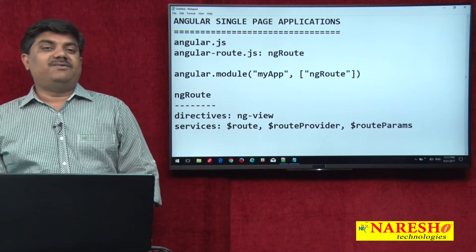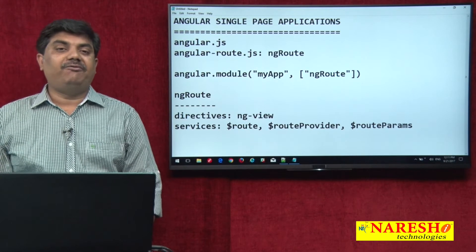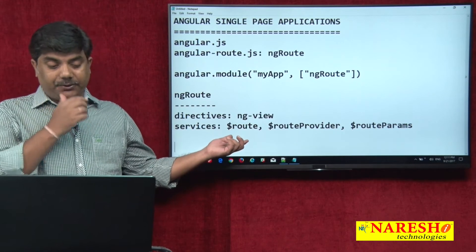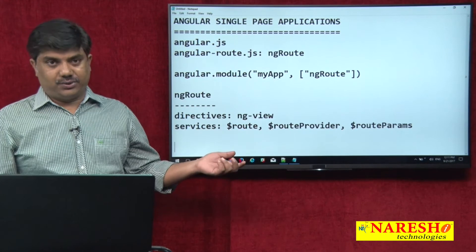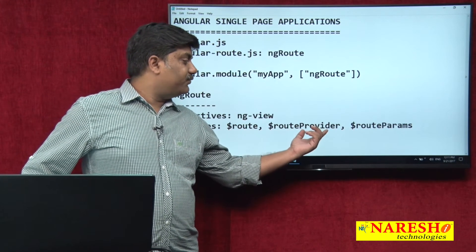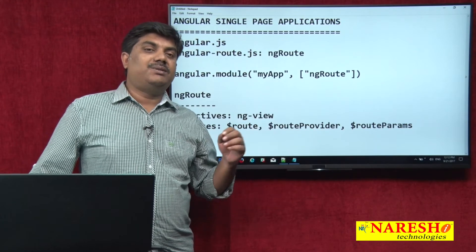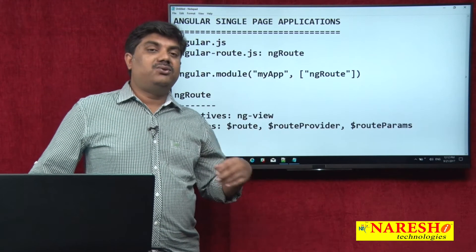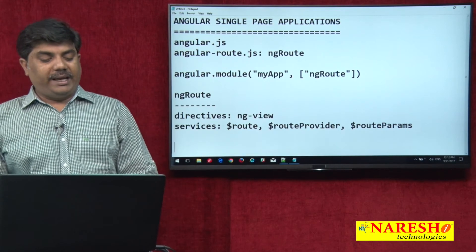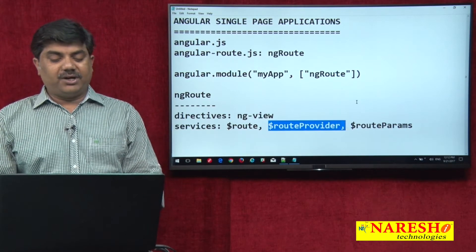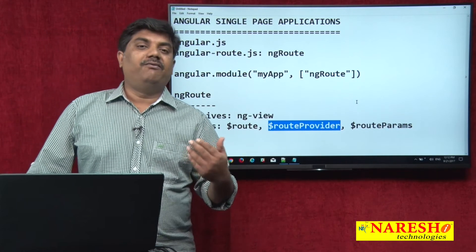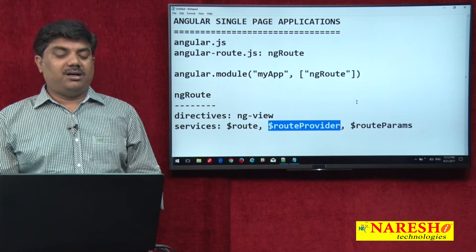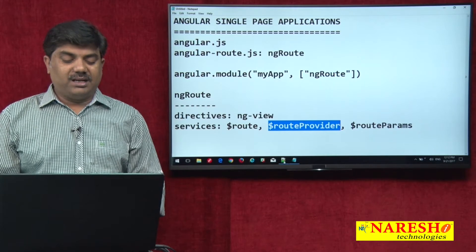When we create a service as a provider, it will have two references. One reference can be used in our controllers or in other services. Another service with the postfix 'provider' must be used mandatorily in the config method only. These provider services are used to configure some information. Here, the routeProvider service we are going to use to configure our views or single page application routes. Let us start and see how we can create single page applications.